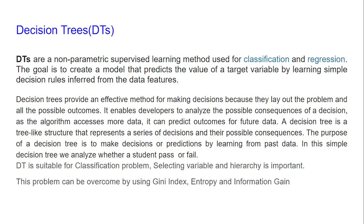Now let us understand the concept of the decision tree, or DT. Decision trees are non-parametric supervised learning methods used both for classification as well as regression. The goal is to create a model that predicts the value of a target variable by learning simple decision rules inferred from the data features.